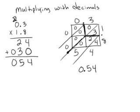And then to figure out where my decimal goes, I look up in my problem. And I have one number behind the decimal in the top number, and one number behind the decimal in the second number, which means I need two—one, two numbers behind the decimal in my answer. So I go ahead and place my decimal so that I have two numbers behind it.